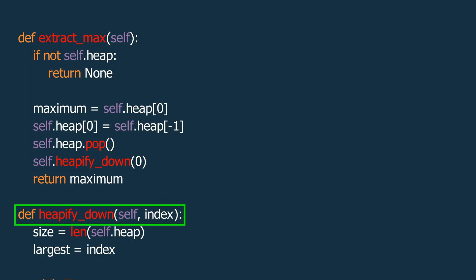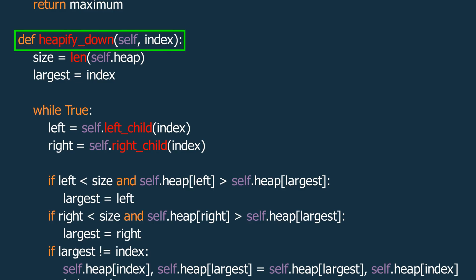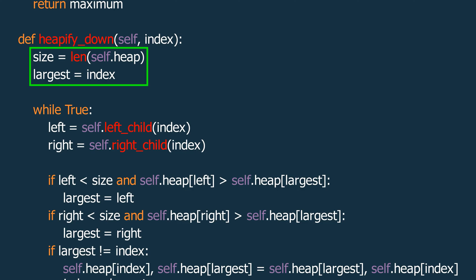Next, let's go over the details of the HeapifyDown function. This function takes the index of the element that needs adjustment. We start by storing the size of the array in a variable called size, and initializing another variable, largest, with the current index, assuming this element is the largest for now. We then enter a loop where we calculate the indices of the left and right children of the current element, and store them in left and right variables. We then check if the left child exists and if its value is greater than the current element's value. If it is, we update largest to the left child's index.